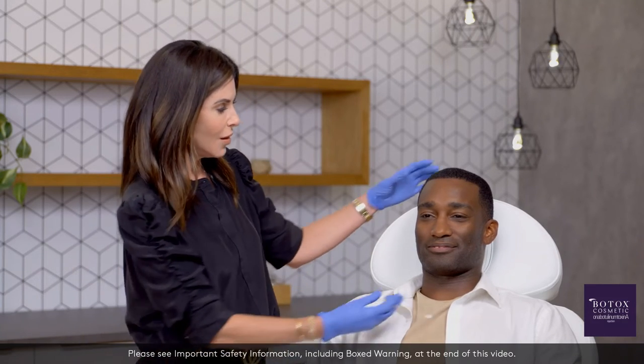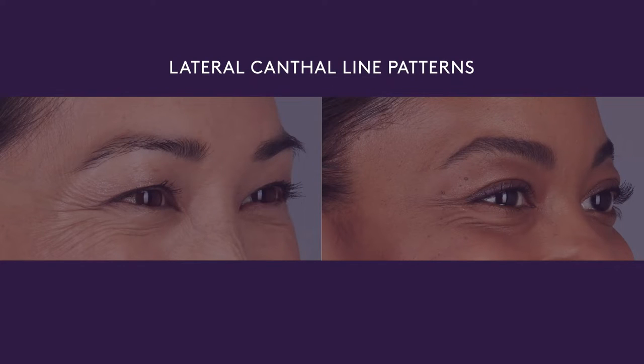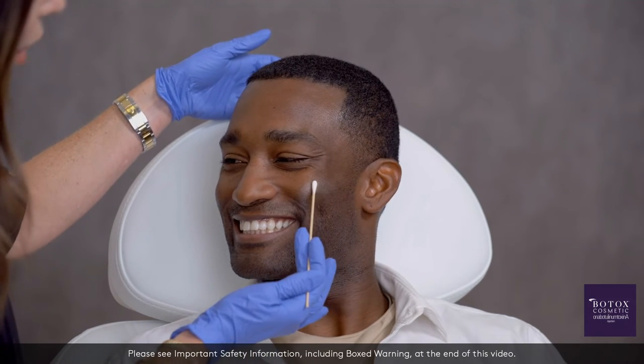Next we'd like to ask Darius to smile widely and look at his left and right profile. Two types of patterns are found in lateral canthal lines: full fan pattern and lower fan pattern. Darius has the full fan pattern in his lateral canthal lines.